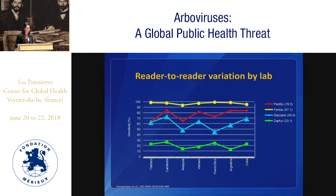The other issue with NS1 rapid tests — and I refer back to this WHO 2009 study, which actually shows IgM — is that there's a reader-to-reader variation by lab. Even though this is the same panel and the same lot of tests, you can see sensitivity as low as 45% and as high as 70% even though every single country had the exact same panel. Having that sort of subjective reading of these tests makes it quite difficult for interpretation and sensitivity issues.